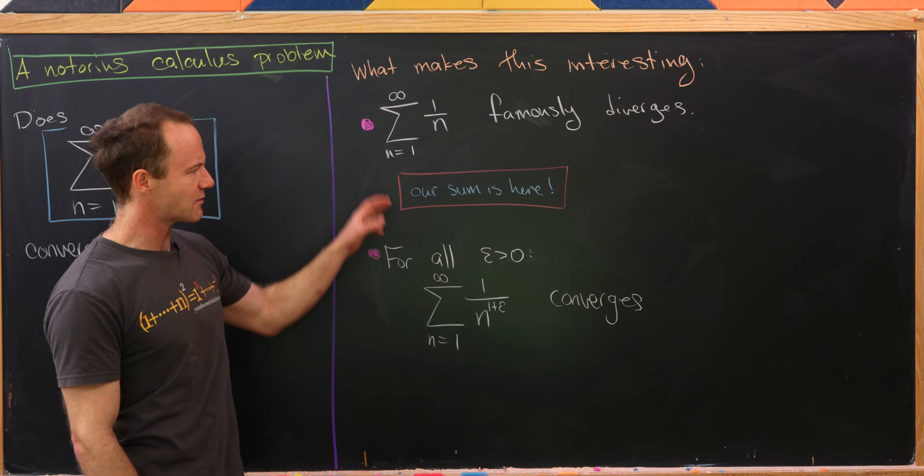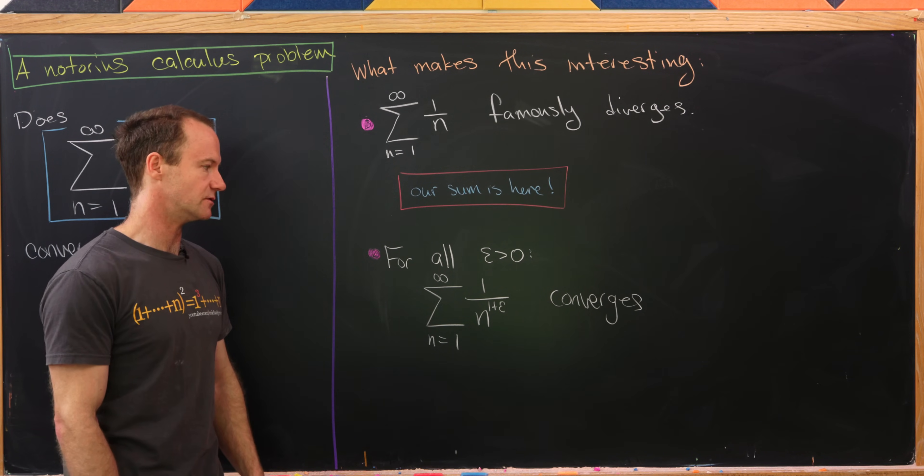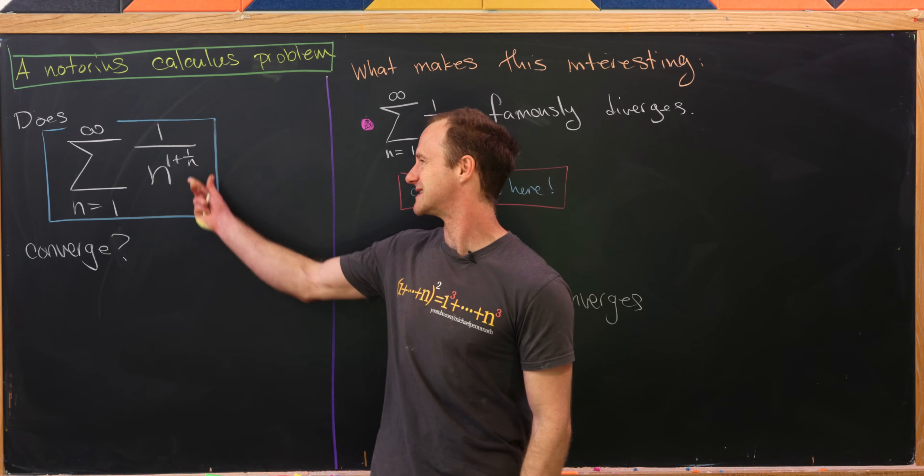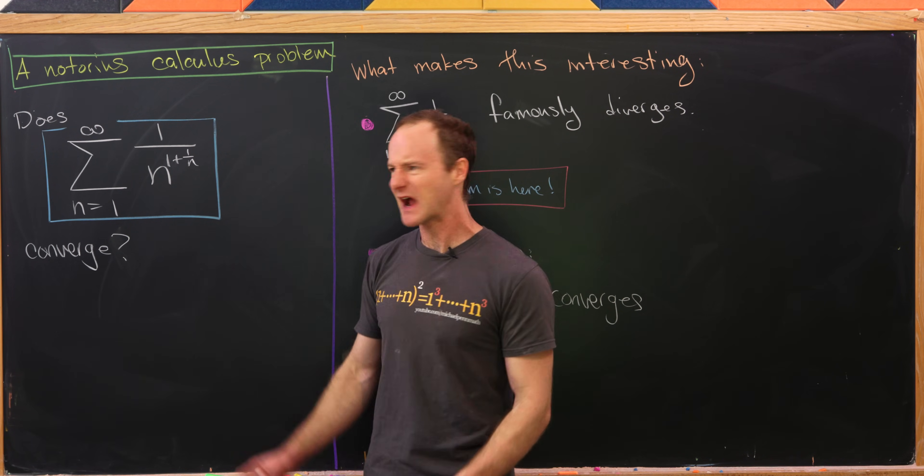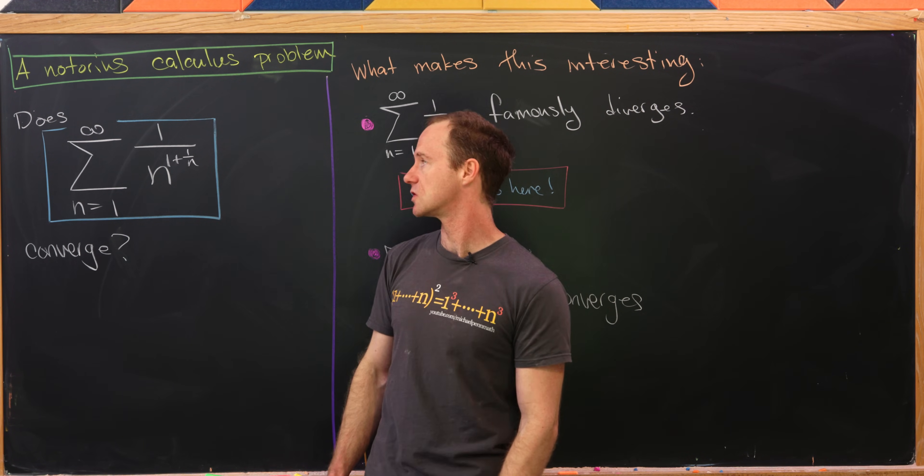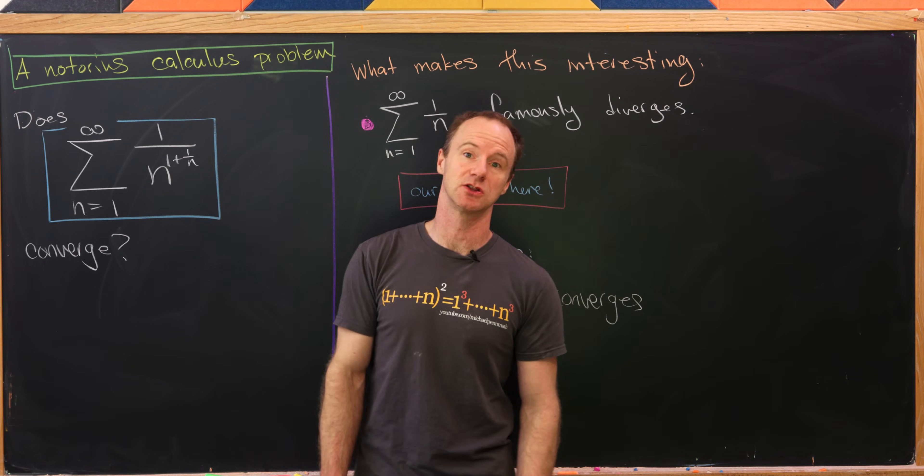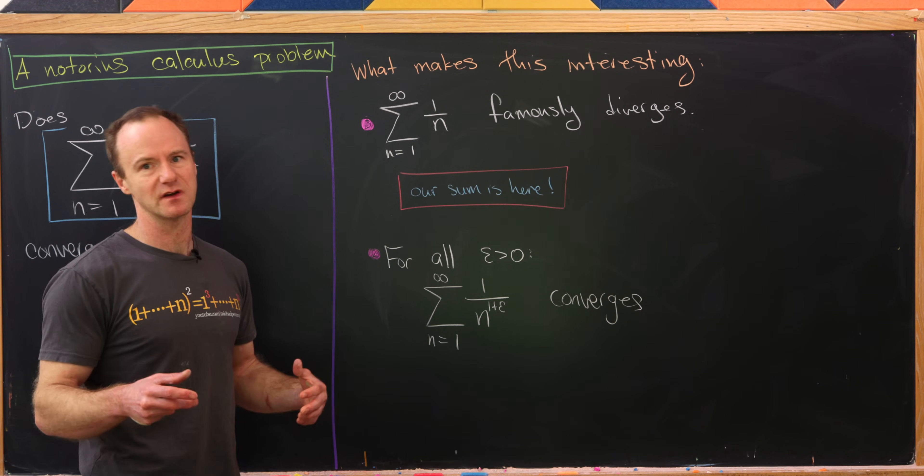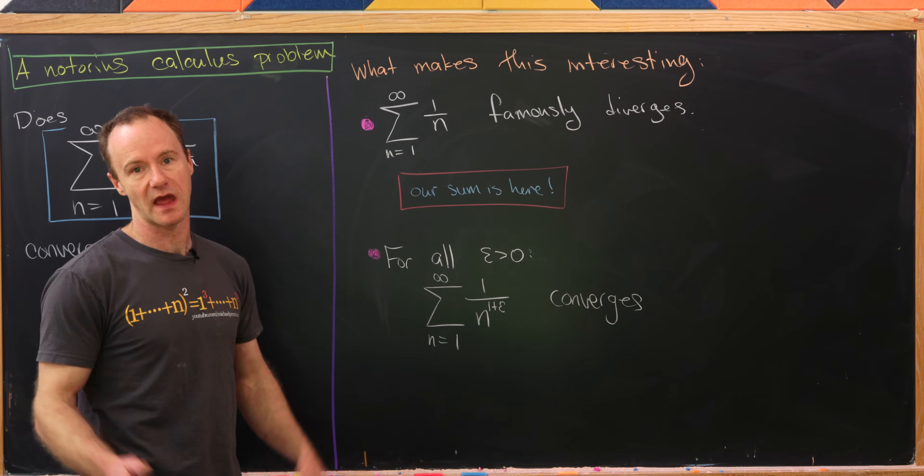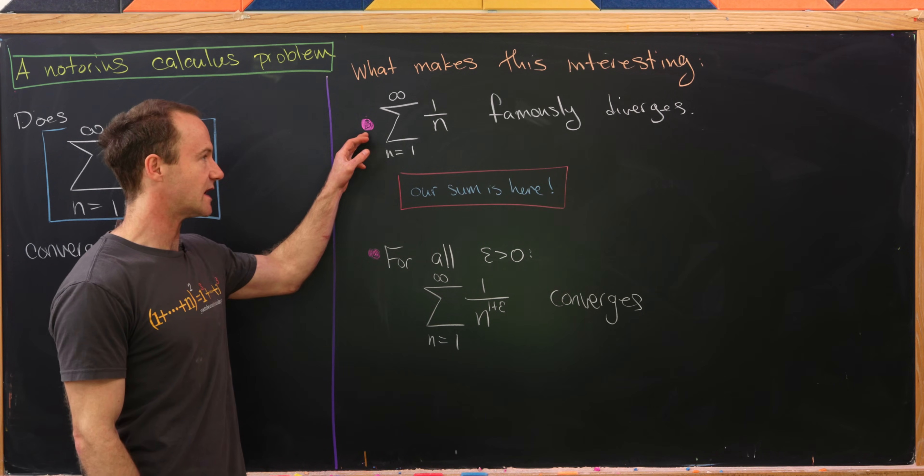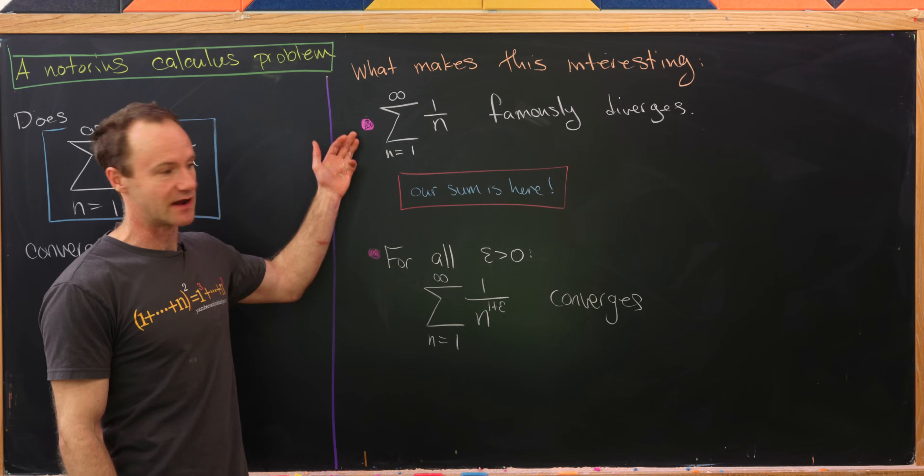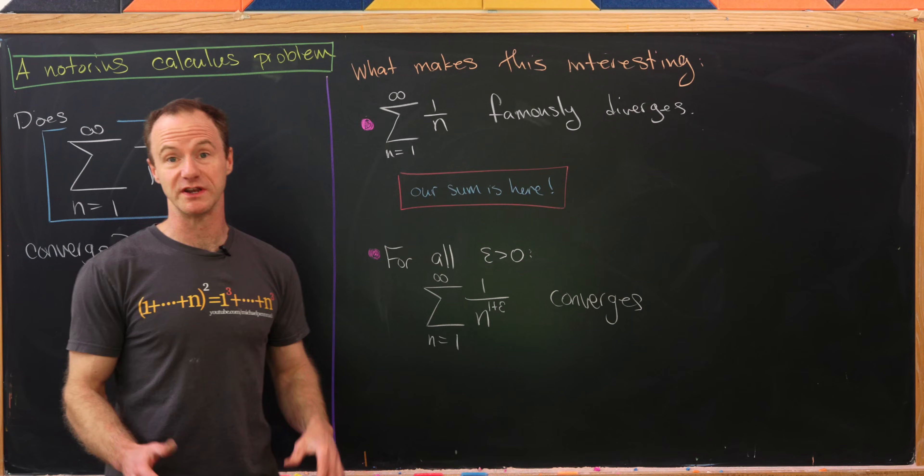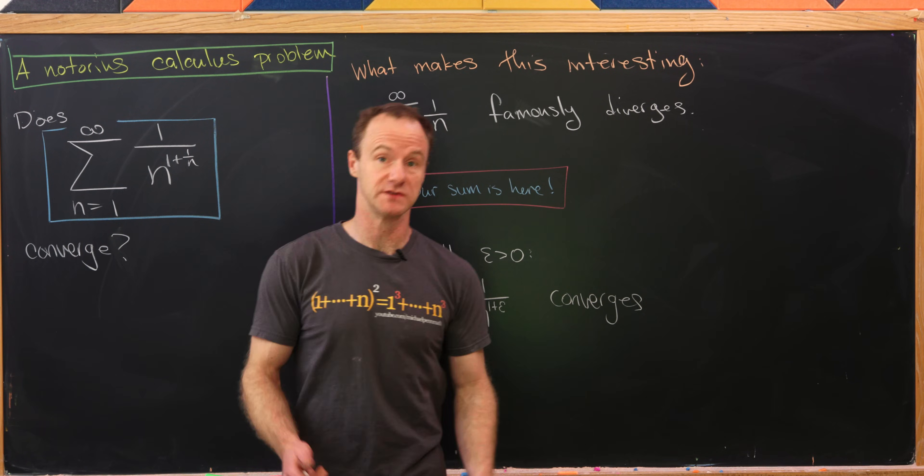Notice that our sum is somewhere in the middle of these two. So the exponent is most definitely always bigger than 1, but it's not fixed. In fact, that exponent is getting closer and closer and closer to 1 as n gets larger and larger. And that's what makes this kind of a little bit nebulous as to what the answer is immediately, because we're between a series that diverges and a series that converges.